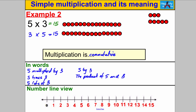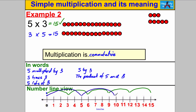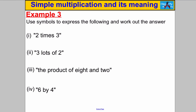On the number line, 5 lots of 3 means starting at 0 and going up in threes: one three, two threes, three threes, four threes, five threes — and we get to 15. Doing it the other way, 3 lots of 5 means starting at 0 and going up in fives three times: one five, two fives, three fives — and we get to 15 just as before.